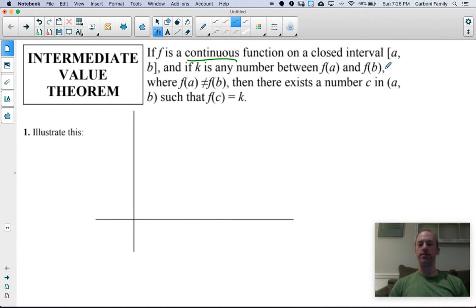So if you have a function that is continuous from A to B, and if K is any number between F of A and F of B where F of A is not equal to F of B, this is a big garbly mathy mess that's hard to understand, and so the easiest way to explain the intermediate value theorem is really through a picture.